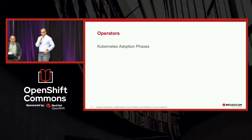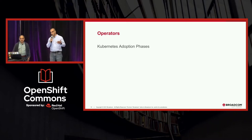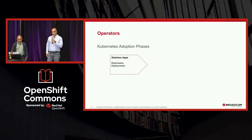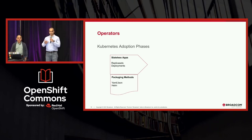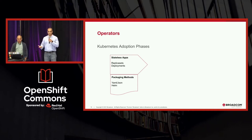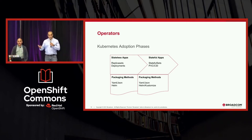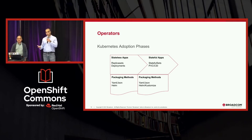Looking at Kubernetes adoption phases throughout the journey: we started with stateless applications backed by replica sets and deployments — more than half a decade ago. Packaging mechanisms were YAML, JSON manifests, and Helm coming into the picture. Then came stateful applications — database applications, Redis clusters, MongoDB clusters — backed by persistent volume claims with CSI drivers, with new packaging mechanisms like Kustomize being adopted.